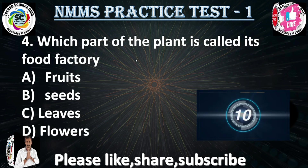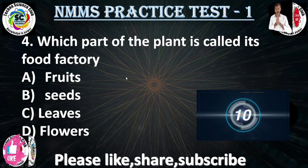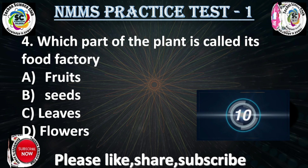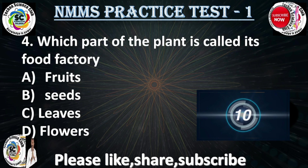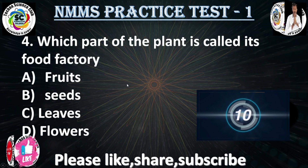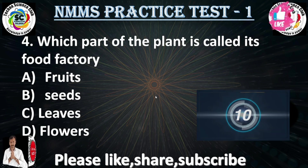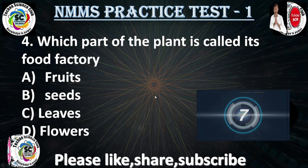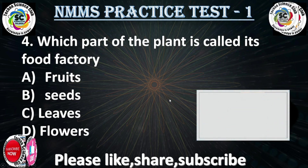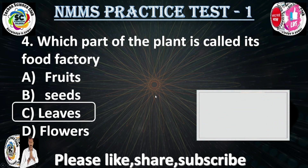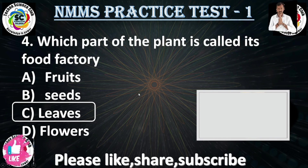Question No. 4: which part of the plant is called its food factory? Plants make their own food by photosynthesis, so in which part does the photosynthesis process take place? Option A: fruit, Option B: seeds, Option C: leaves, Option D: flowers. Your time starts now. The answer is leaves. Photosynthesis happens in the leaves, and that is why leaves are called the food factory of the plant.